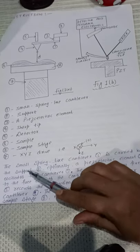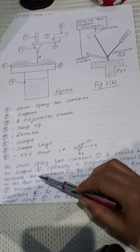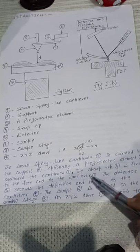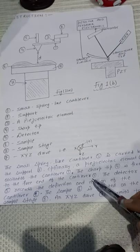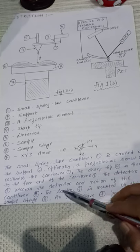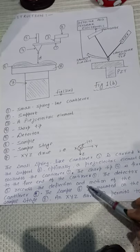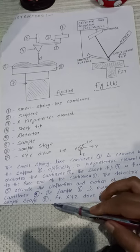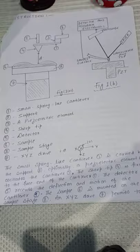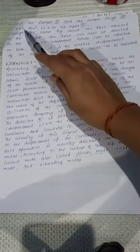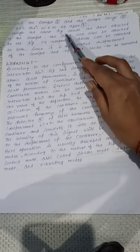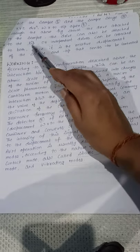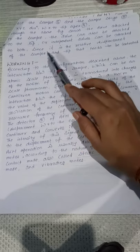The small spring-like cantilever (1) is carried by the support (2). Optionally, a piezoelectric element (3) oscillates the cantilever (1). The sharp tip (4) is fixed to the free end of the cantilever (1). The detector (5) records the deflection and motion of the cantilever (1). The sample (6) is mounted on the sample stage (8), and XYZ drive (7) permits to place the sample (6) in XYZ direction with respect to tip apex (4). The above figure shows the drive attached to the sample. The drive can also be attached to the tip or independent drives can be attached to both, since it is the relative displacement of the sample and tip that needs to be controlled.